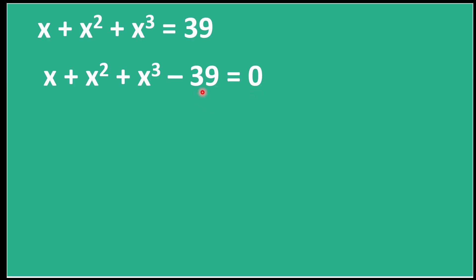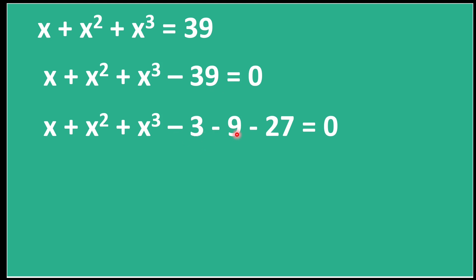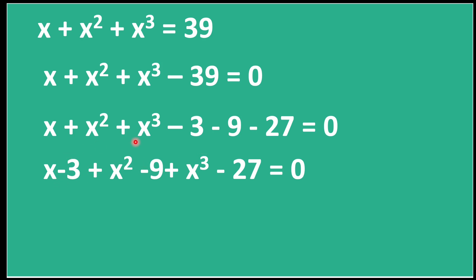Now we will split 39 into 3, 9, and 27. So this becomes minus 3, minus 9, minus 27, which again equals minus 39. Why did we split it this way? Because we want terms matching powers 1, 2, and 3 — so 3^1, 3^2, and 27 as 3^3. We can then rearrange as (x − 3) + (x² − 9) + (x³ − 27) = 0.